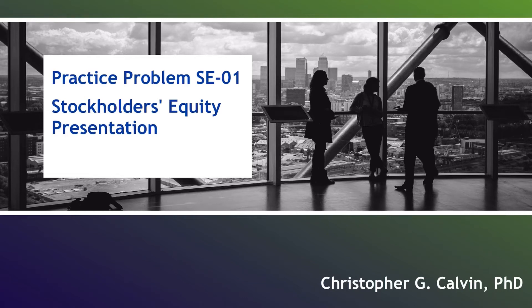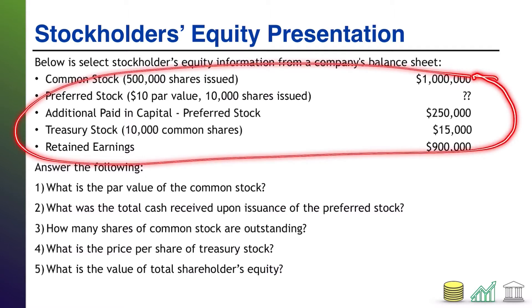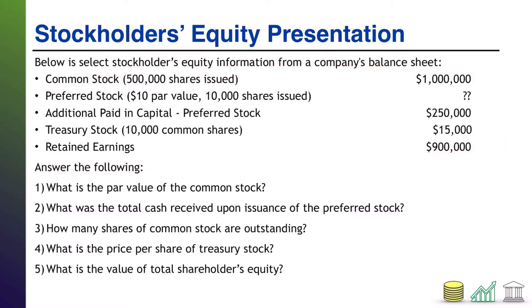Hi, everyone. Welcome to Practice Problem SEO1. This one is going to test your ability to connect the pieces of the shareholder's equity section of the balance sheet. Here I give you select stockholder's equity information from a company's balance sheet, including info about common stock, preferred stock, APIC, treasury stock, and retained earnings. I give you five questions to try to identify based on the given information. Take a moment, pause the video, see if you can do these five questions on your own. When you're ready, come on back and I'll walk through them.